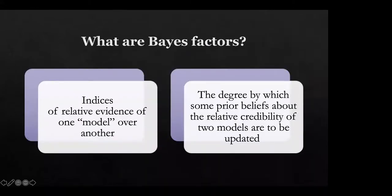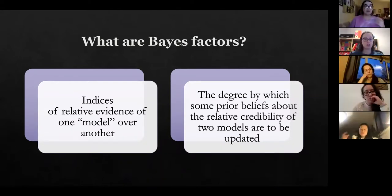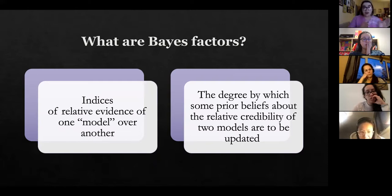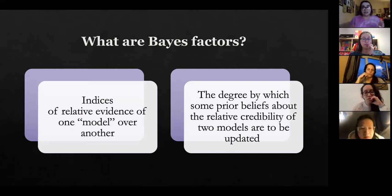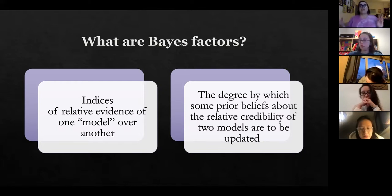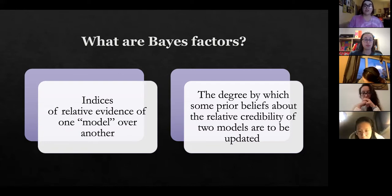In Bayesian analysis generally you can do really complicated stats. Bayes factors are only one type of Bayesian analysis. In simple terms, they are an index of relative evidence of one model over the other. The case I'm talking about is comparing your experimental model to the null hypothesis. They can also be considered the degree by which prior beliefs about the relative credibility of two models are updated.